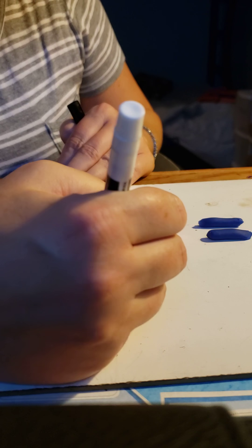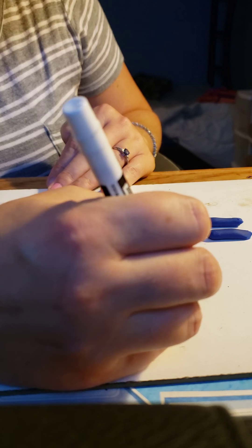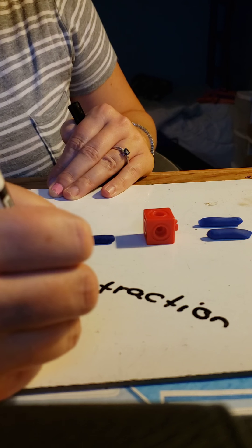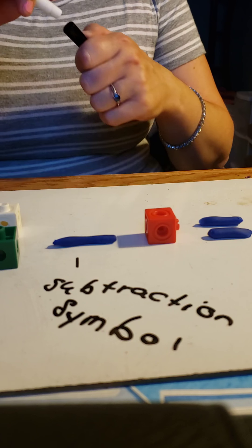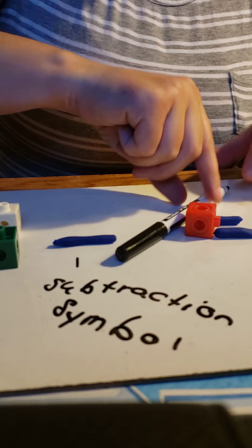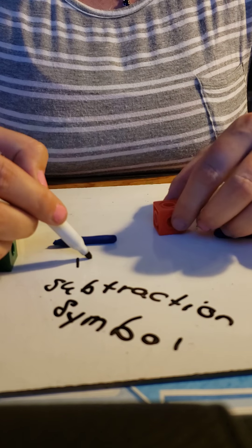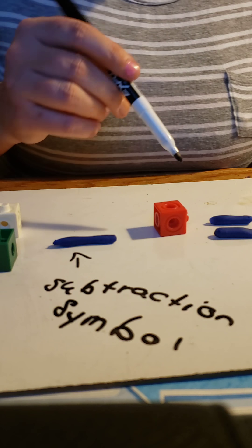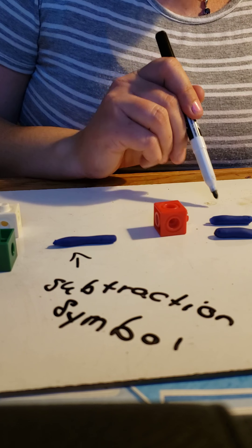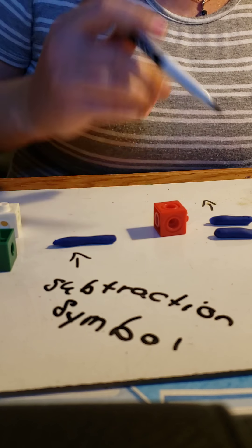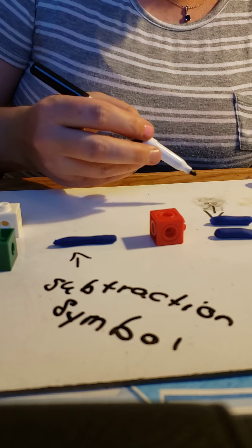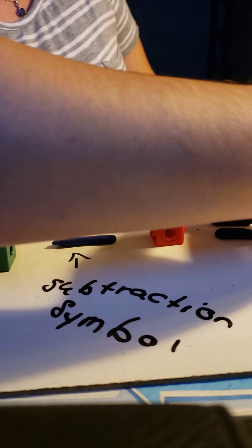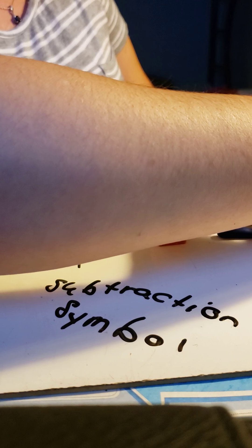Sorry, I'm trying to write upside down. Subtraction symbol — this right here is your subtraction symbol. Now what's this one called, guys? This is your equal sign. So here's our problem: we have 2. 2 minus — how many is this one? 1. Then you have the equal sign. And what's your difference? Let's do it with our hands. Here's 2, and I take away 1. How many are left? 1! Awesome! Good job, guys.